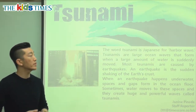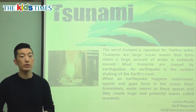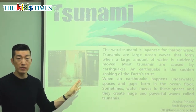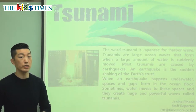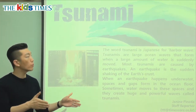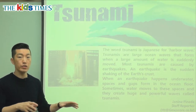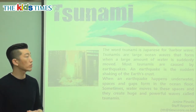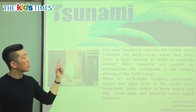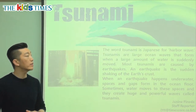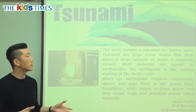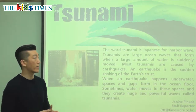The word tsunami is Japanese for 'harbor wave.' We know what wave is — wave is the large movement of the water, especially in the ocean. And harbor is where, if you go by the water, there's a place where the boats are kept, and that's called the harbor — so it's near the land. The word comes from Japan and it means harbor wave, the wave coming from near the land and the water.